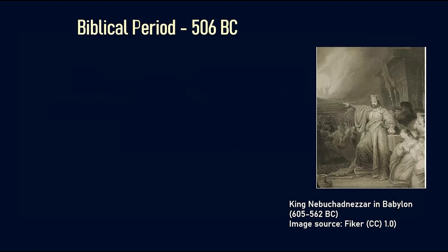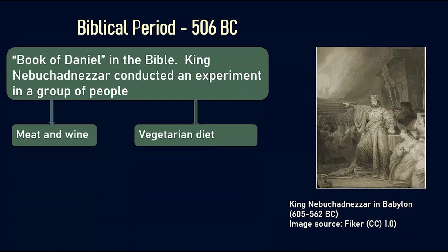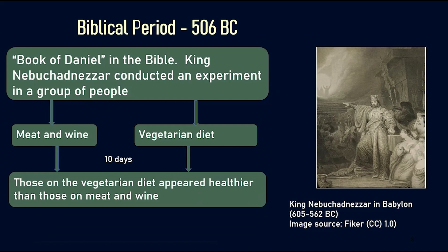The first recorded research was performed in the Biblical period in 506 BC by a king named Nebuchadnezzar. He conducted an experiment where one group was allowed to eat only meat and drink only wine, whereas another group was forbidden this and were strictly on a vegetarian diet. They were followed up for 10 days, underwent physical examination, and those on the vegetarian diet appeared healthier than those on meat and wine.